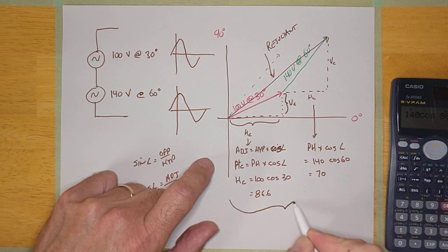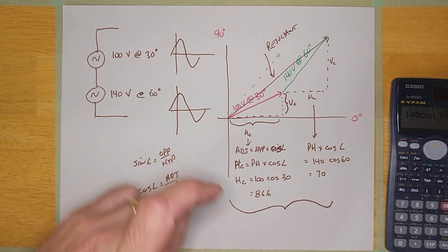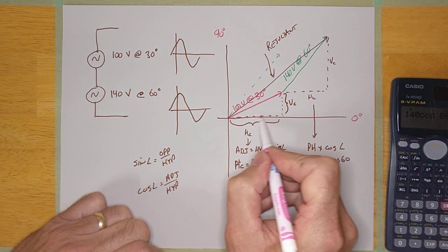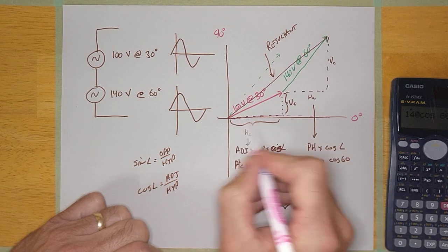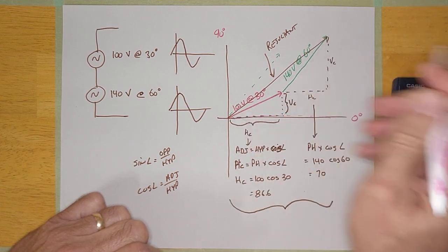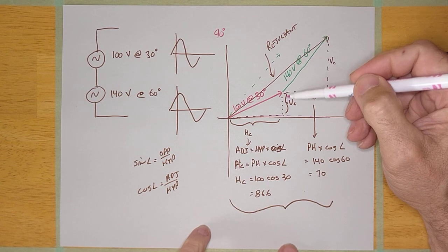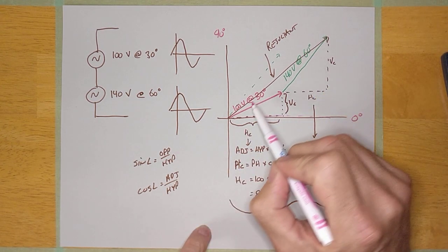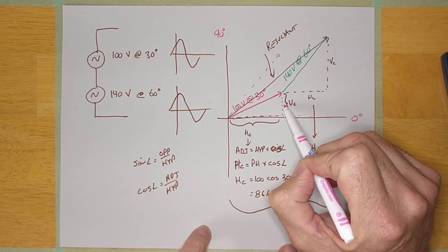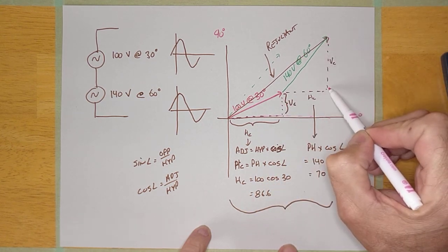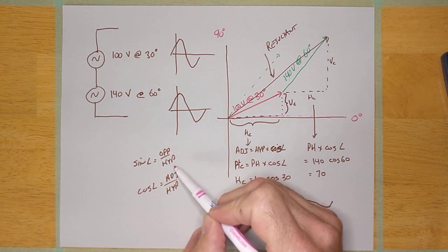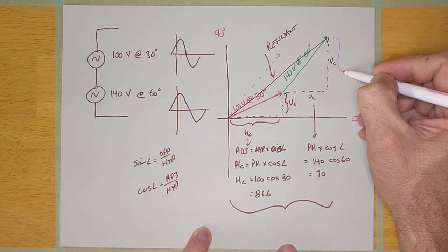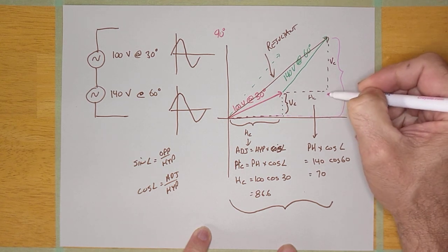We can add those two horizontal components together to get the total horizontal component for the resultant. Similarly, we can calculate the vertical component for each phasor using sine — it's the phasor times the sine of its angle. Then we add those up to get the total vertical component of the resultant.